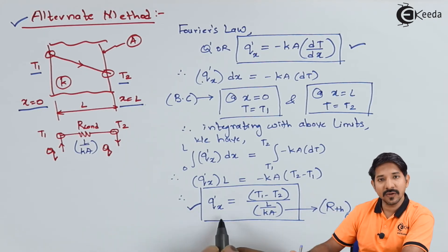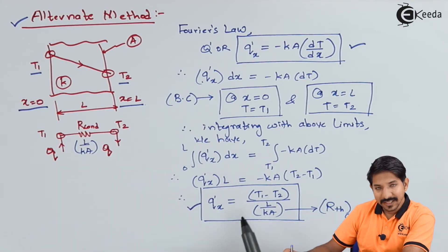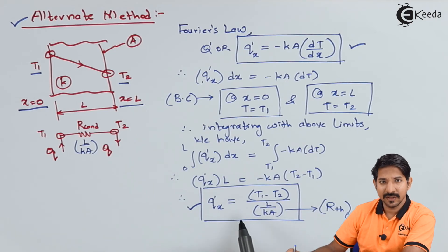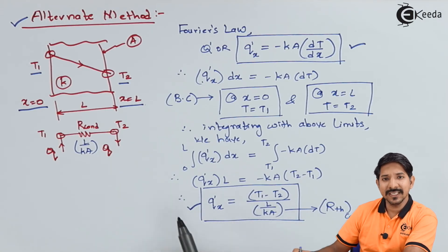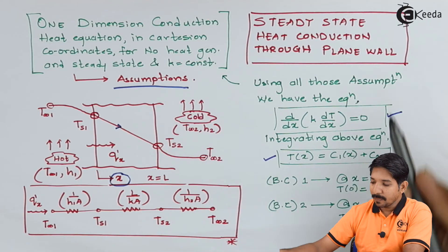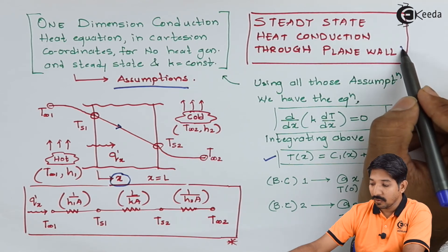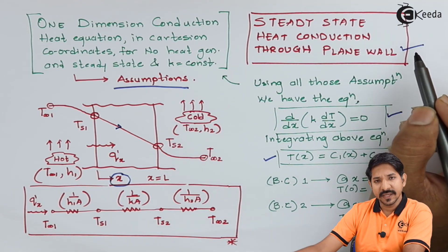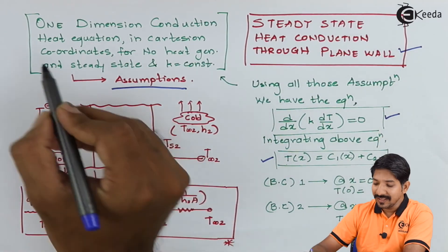In the previous case, we could also find the temperature distribution from the general solution, whereas here we only get the heat transfer rate. You can choose either method, but the first method is more equipped to find the temperature distribution for any given case. Here we have discussed steady state heat conduction through a plane wall, deriving the temperature distribution and heat transfer rate with the stated assumptions.